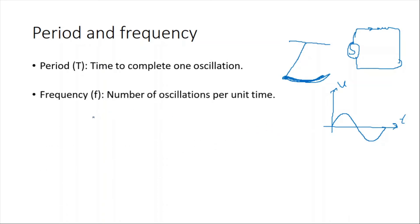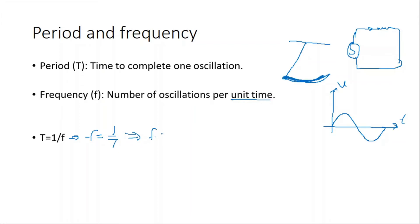The frequency of oscillation is the number of oscillations per unit time. For example, how many oscillations occur in one second? In an alternating current circuit, the frequency is the number of complete cycles per unit time. There is a relationship between frequency and period: T = 1/f, or f = 1/T, or f × T = 1.